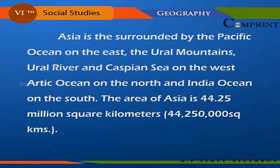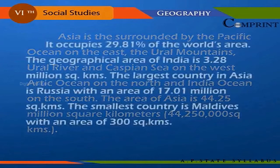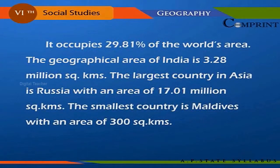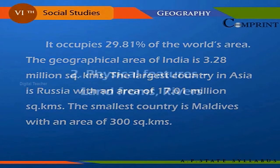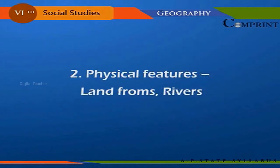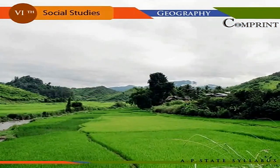The area of Asia is 44.25 million square kilometres, occupying 29.81 percent of the world's area. The geographical area of India is 3.28 million square kilometres. The largest country in Asia is Russia with an area of 17.01 million square kilometres, and the smallest country is Maldives with an area of 300 square kilometres.